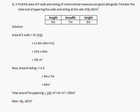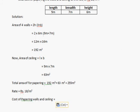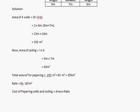The cost of papering walls and ceiling formula is area times rate. The total area is 255 square meters and the rate is Rs 18 per meter square.